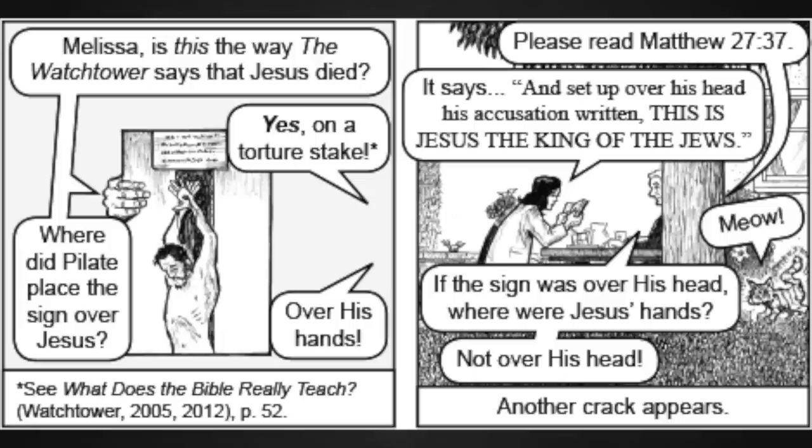Page 10. Looks like they're going to talk about the fact that Jehovah's Witnesses think Jesus died on a stake rather than a cross. There's a picture of Jesus on a pole sticking out of the ground. The householder says, Melissa, is this the way the Watchtower says that Jesus died? Melissa responds, yes, on a torture stake. The householder says, where did Pilate place the sign over Jesus? She says, over his head. The householder says, please read Matthew 27, 37. Melissa responds, it says, and set up over his head accusations written, this is Jesus, the king of the Jews. A cat says, meow.